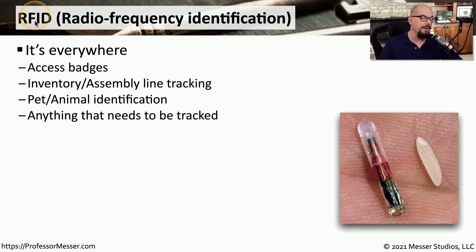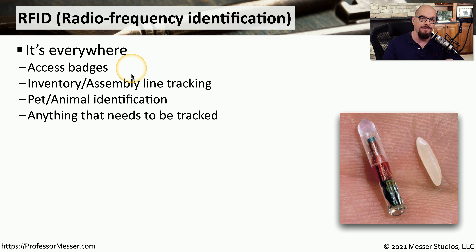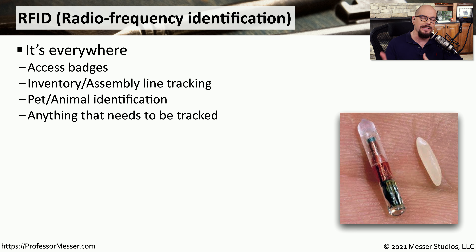A very common wireless network type is RFID, which stands for Radio Frequency Identification. RFID is used in so many aspects of our lives today. If you use an access badge to gain access through doors at work, you'll probably have an RFID chip inside that badge. If you work on an assembly line or need to track equipment in a warehouse, there's probably RFID inside those pallets or boxes. Many pets have RFID chips inside them so we can track them if they get lost. Anything that needs to be tracked tends to have RFID, primarily because RFID is so small — an RFID chip can sit right next to a grain of rice.